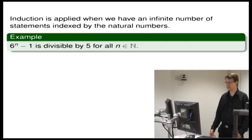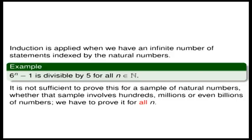For example, take the statement: 6 to the power n minus 1 is divisible by 5, for all n in the natural numbers. So if we took n is 1,000, then 6 to the power 1,000 minus 1 is divisible by 5. Now, this might appear a bit surprising. It's not sufficient to prove this for a sample of natural numbers, whether that sample involves hundreds, millions, or even billions of numbers. We have to prove it for all n.